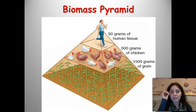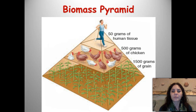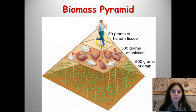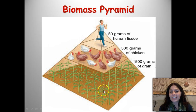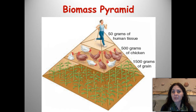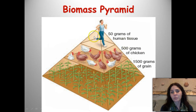The biomass pyramid shows how much mass each level needs to be supported. So 1,500 grams of grain will only support 500 grams of chicken. 500 grams of chicken will only support 50 grams of human tissue. Just to give you an example, 500 grams is really light — that's not even two pounds, maybe about a third of a pound. So you're talking about a lot of grain to support all these chickens, and a lot of chickens to support this human.